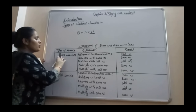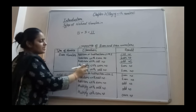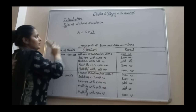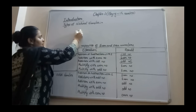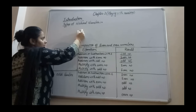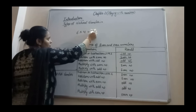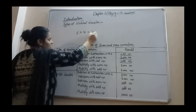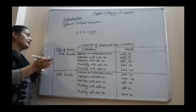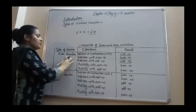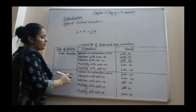Next property: when you multiply an even number with an even number, your result is an even number. For example, 6 is even and 4 is even. 6 multiplied by 4 is 24, which is also an even number. So when you multiply any even number with another even number, the result is always an even number.